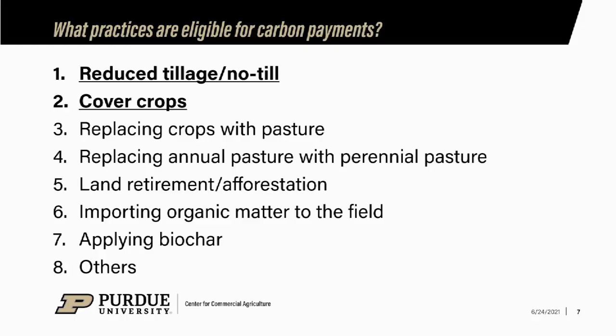To qualify for some of these programs, you're obviously going to have to make changes to your production practices — practices that are known to sequester carbon. When we think about row crop agriculture, the two that really get the most traction are a reduction in tillage or no-till, and implementing cover crops. Both practices are scientifically shown to sequester carbon, and they're the hallmarks of the programs currently out there.